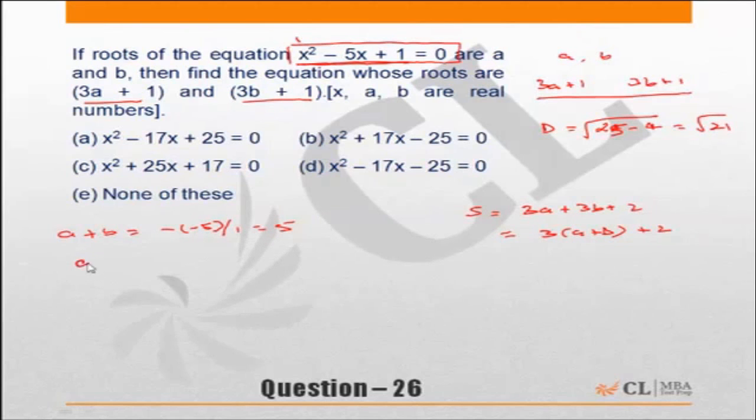Similarly, the product of roots a into b as per the original equation would have been c upon a which is equal to 1. So a plus b is 5, ab is 1. So sum of roots is nothing but 3 into 5, 15 plus 2, 17.